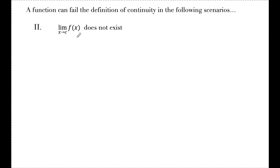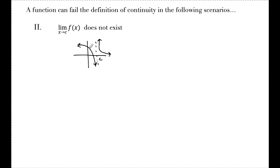The second part of the continuity definition says the limit as x approaches c of f of x must exist. So if the limit as x approaches c of f of x does not exist, the function would not be continuous. Graphically, that looks like this: if I have a vertical asymptote at x equals c where as I approach c from the left my function approaches negative infinity, and from the right my function approaches positive infinity, then since the limit as x approaches c does not exist, this function is not continuous at x equals c.